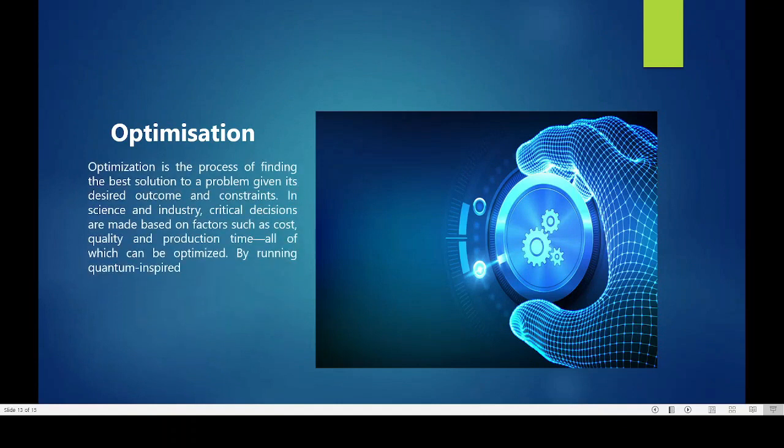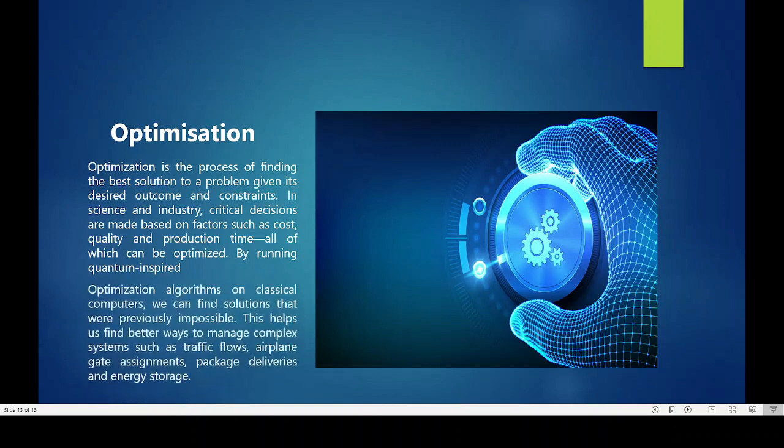Optimization. Optimization is the process of finding the best solution to a problem given a desired outcome and constraints. By running quantum-inspired optimization algorithms on classical computers, we can find solutions that were previously impossible. This helps us find better ways to manage complex systems such as traffic flows, airplane gate assignments, package deliveries, and energy storage.